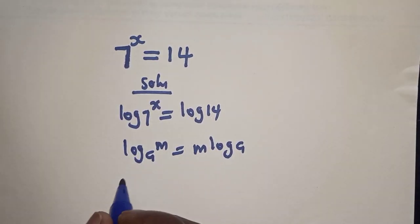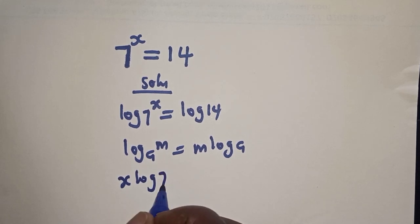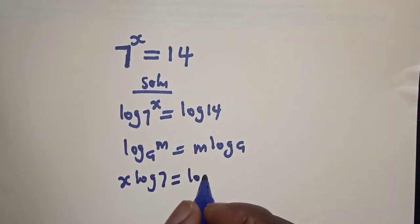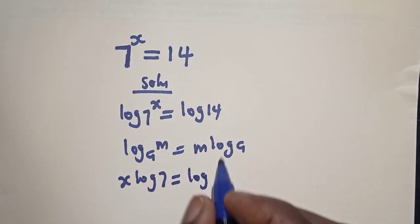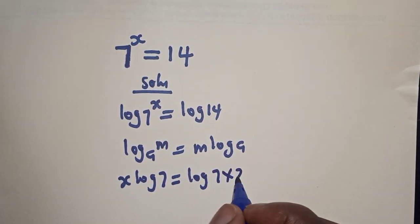And here, s log 7 is equal to log 14. Now 14 is 7 multiplied by 2.